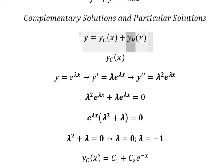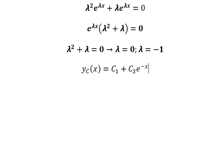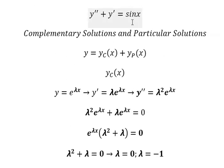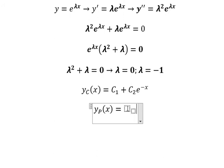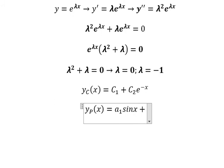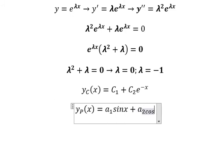Now for the particular solution y_p, we look at the function and see that we have sine x, which is trigonometric. So we assume y_p equals a1 sine x plus a2 cosine x.